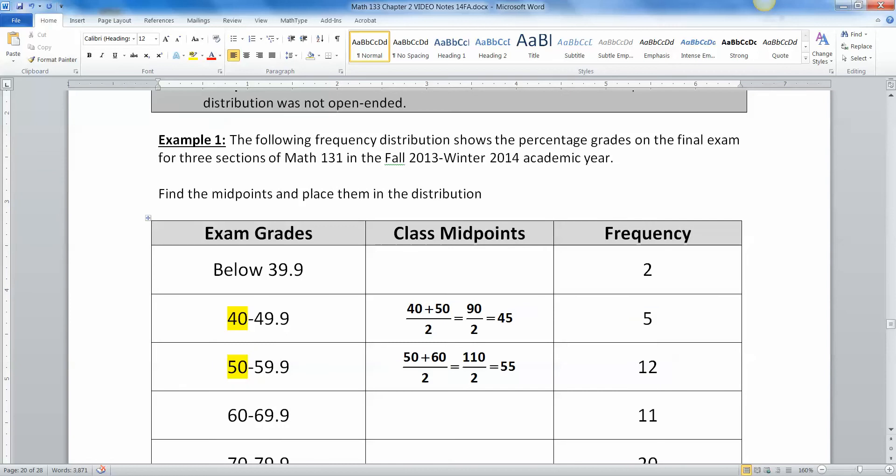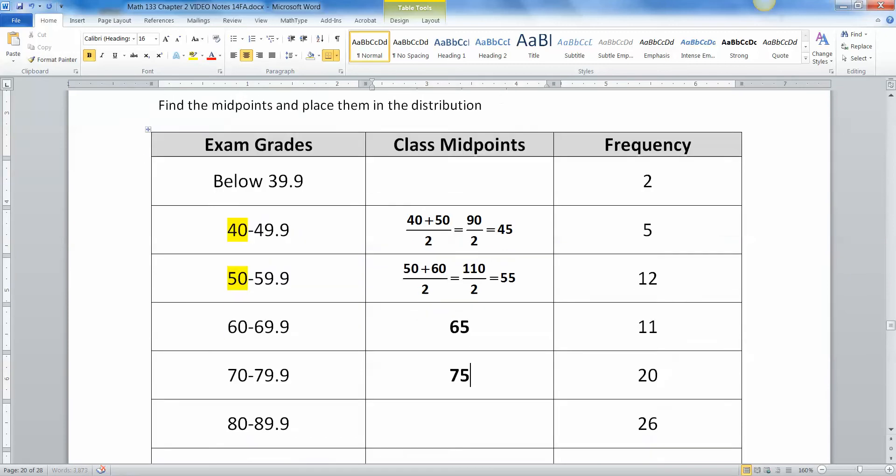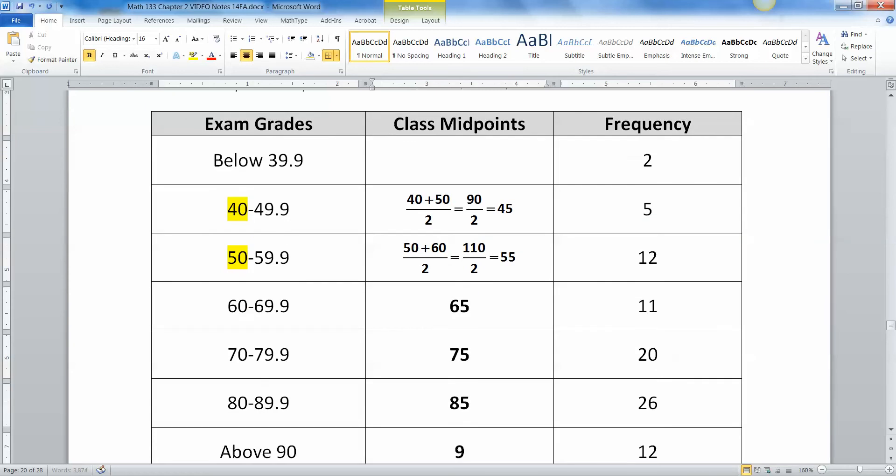Now you can use that to kind of help yourself. I mean, if you don't want to sit here and do the formula, because you could do the formula, 60 plus 70 divided by 2, 70 plus 80 divided by 2. You could do that. But you're going to run into this pattern of they're 10 apart. 45 plus 10 makes 55. 55 plus 10 makes 65. 65 plus 10 is 75. And then 85. And then 95.